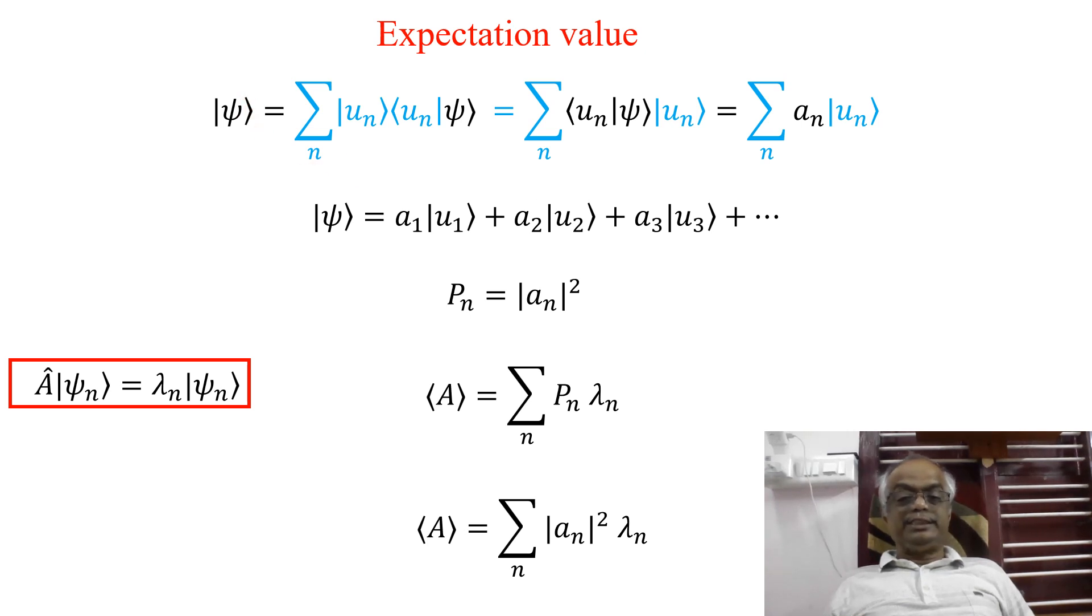Now you take a wave function Psi and what I am going to do is multiply this by 1. That is this factor: summation over N the outer product. Due to closure property, you know very well this value is 1. Now secondly, you take this. Because this and this are the same, after all I am multiplying by 1. So now what is this? This is the inner product of UN with Psi, which is a number. So I can bring this.